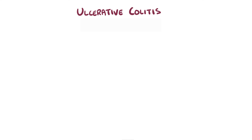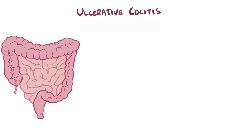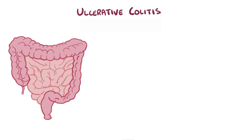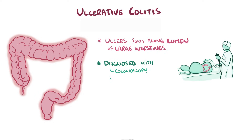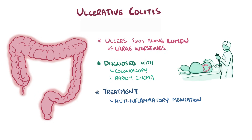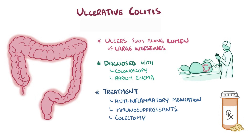As a quick recap: ulcerative colitis is the most common type of inflammatory bowel disease, where ulcers form along the inner surface or lumen of the large intestine, which includes both the colon and the rectum. Ulcerative colitis is diagnosed with the help of colonoscopy and barium enema, and treatment involves anti-inflammatory medications, immunosuppressants, or colectomy to remove diseased parts of the colon in severe cases.